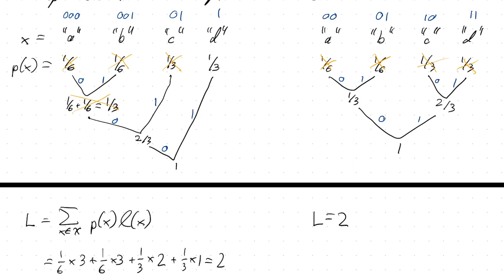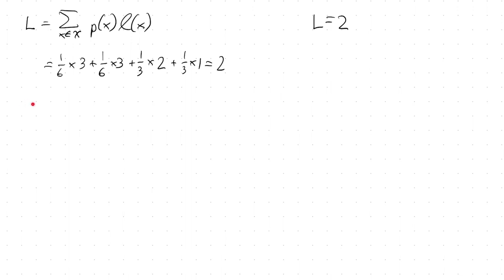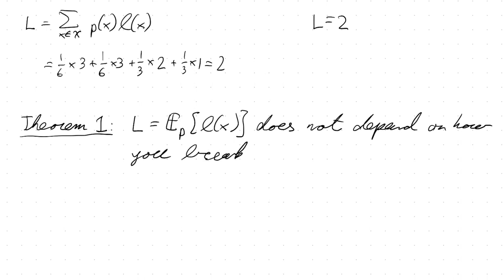The claim — stated as Theorem 1 — is that this is always the case in Huffman coding: whenever you have a tie, no matter how you break it, you will always end up with the same expected codeword length. This is an important preparation so that the optimality theorem we actually want to prove today even makes sense.